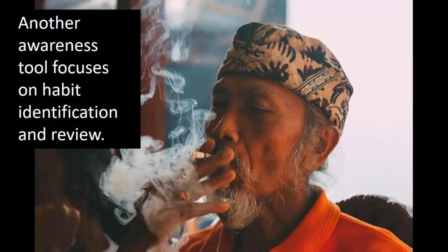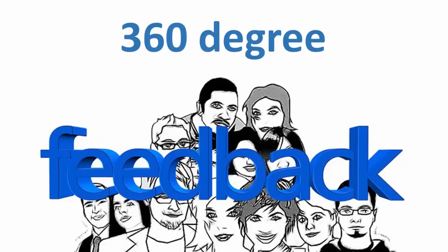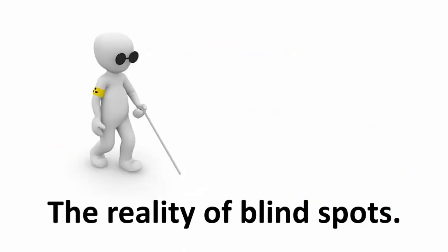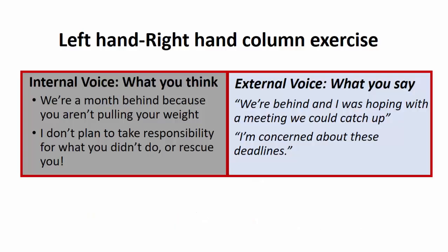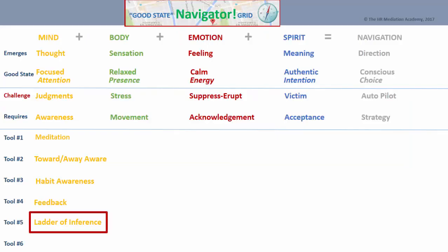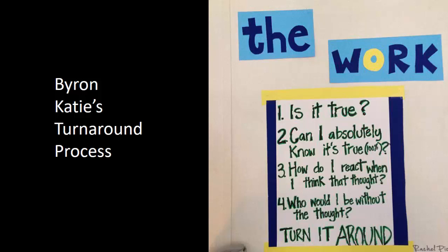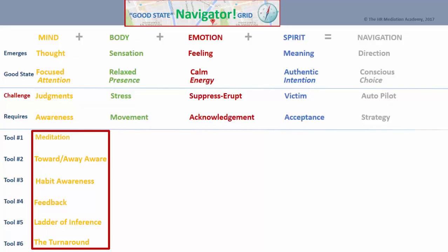Another awareness tool focuses on habit identification and review. Openness to 360-degree feedback is non-negotiable when it comes to awareness and is a rich source of insight, especially given the reality of blind spots. The ladder of inference — which includes the left-hand and right-hand column exercise from Peter Senge — is well suited to reveal how we make sense of the world and how our beliefs, as in judgments about the world, influence our evaluations of what we observe. Finally, Byron Katie's turnaround process is excellent for working on our projections. These are the tools for our focused attention of mind.